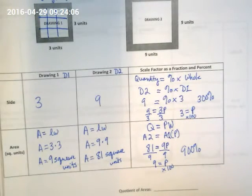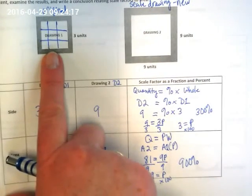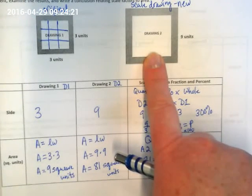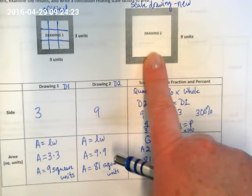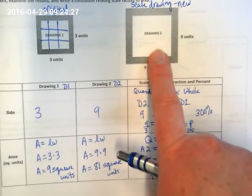That sounds huge, right? 900 percent is 900 over 100. That's big. But think about it. We went from 9 squares that we could easily draw in here to 81 squares in here that we didn't even want to take the time to draw because that would be a lot of squares and they're little.